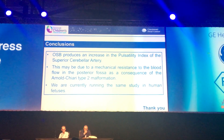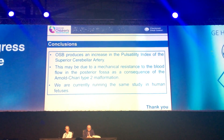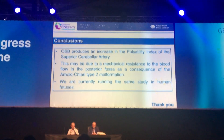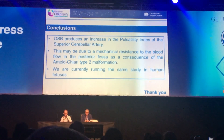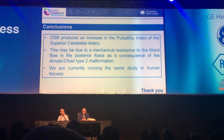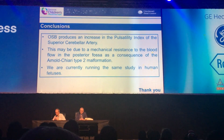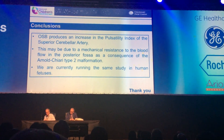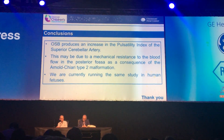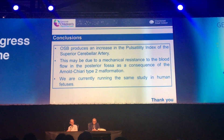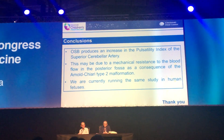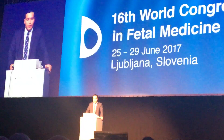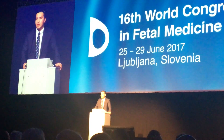The conclusions are: first, open spina bifida produces an increase in the pulsatility index of the superior cerebellar artery. Second, this may be due to mechanical resistance to blood flow in the posterior fossa as a consequence of hindbrain herniation — the Chiari type II malformation secondary to open spina bifida. This is important because, as mentioned at the beginning, this would potentially be a helpful aid in pre-surgical and post-surgical assessment of fetuses requiring in utero surgery for spina bifida. Finally, we are currently running the same study in human fetuses. Thank you.